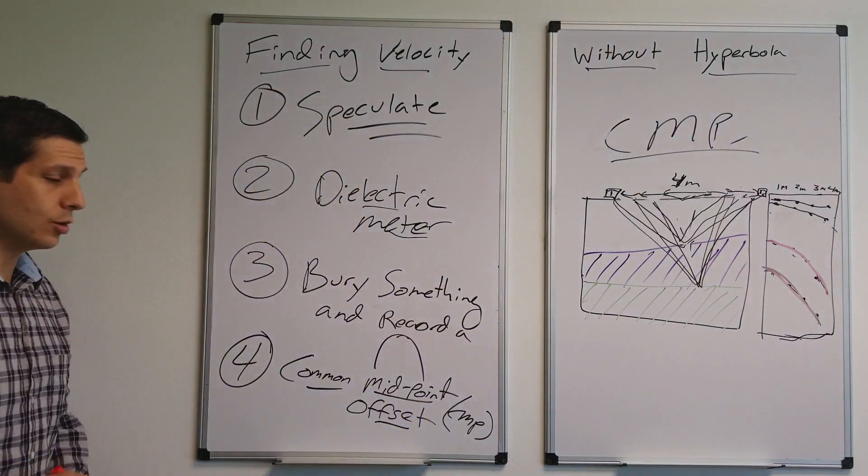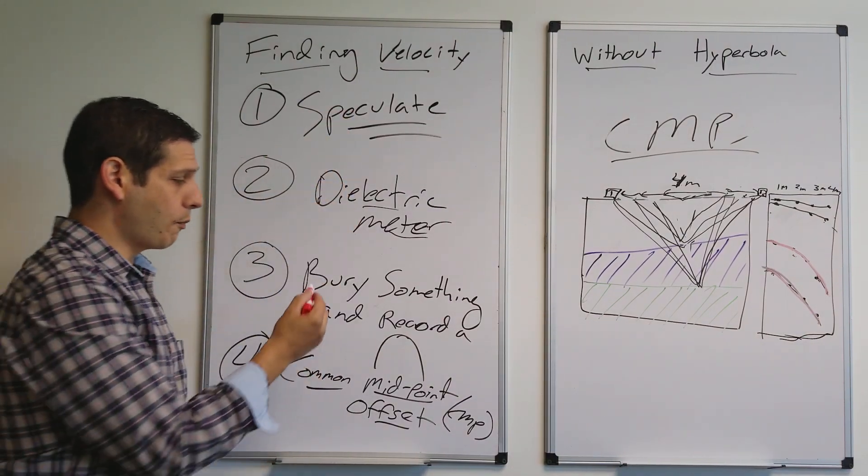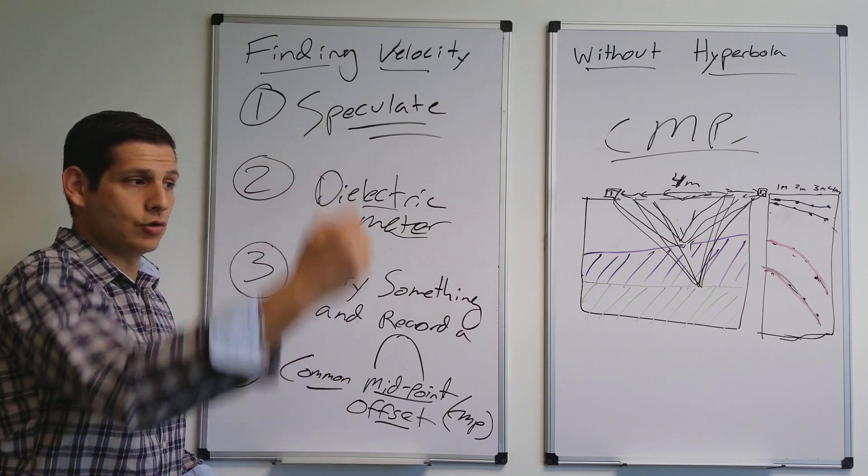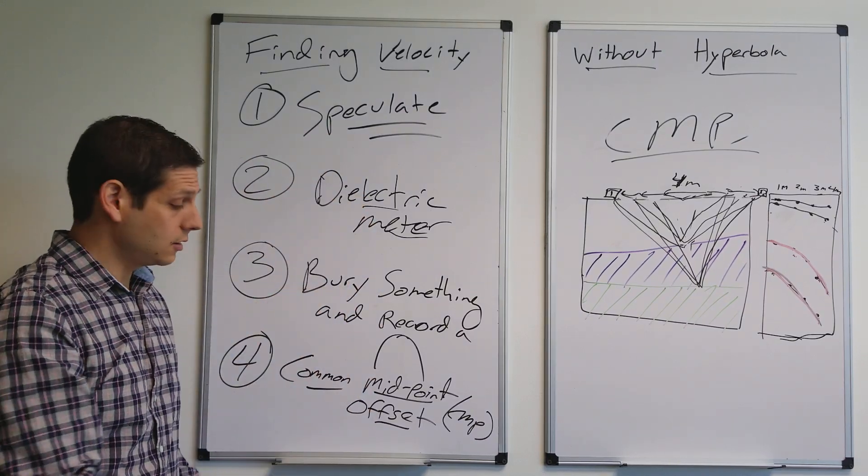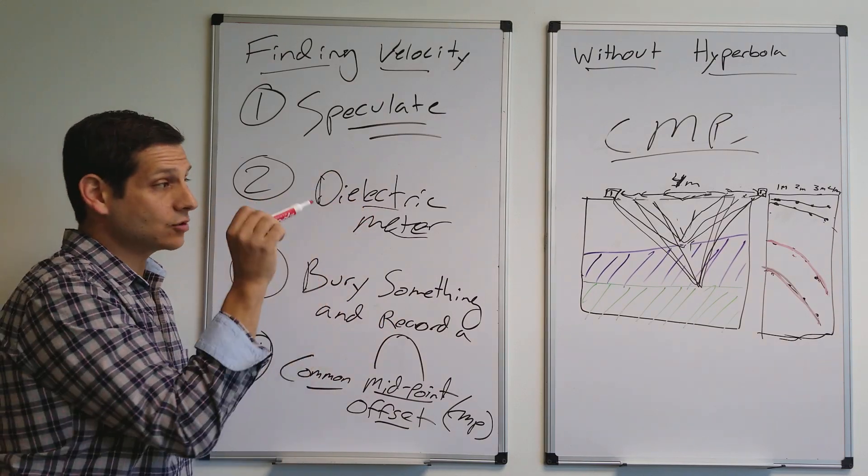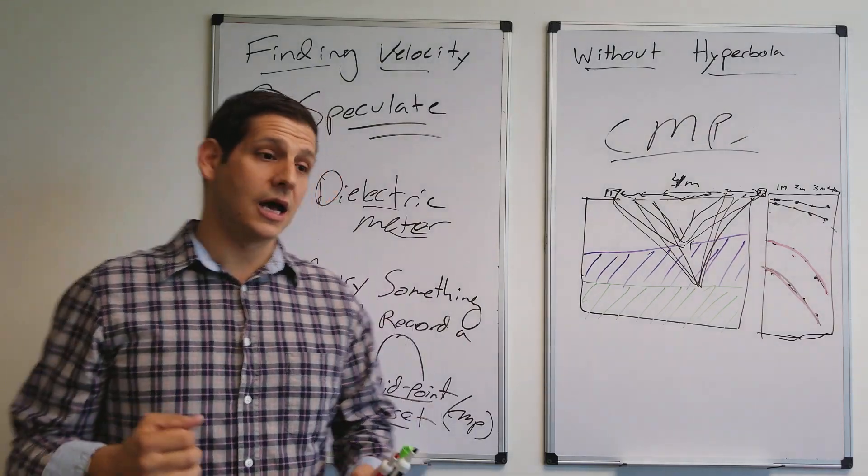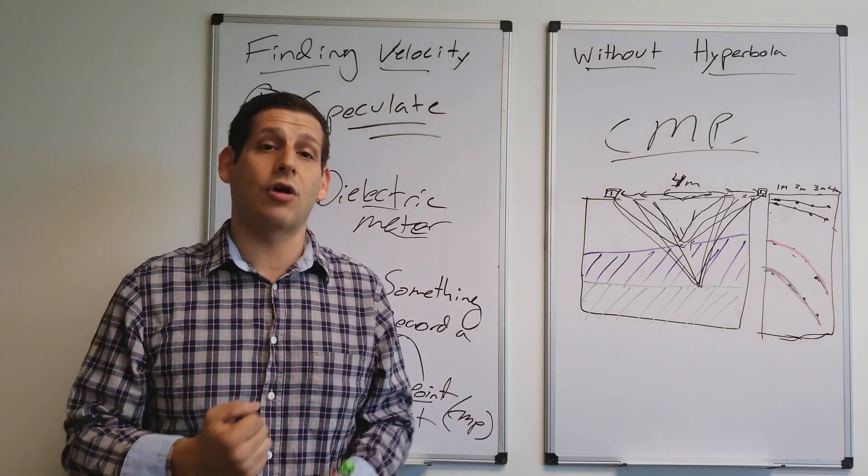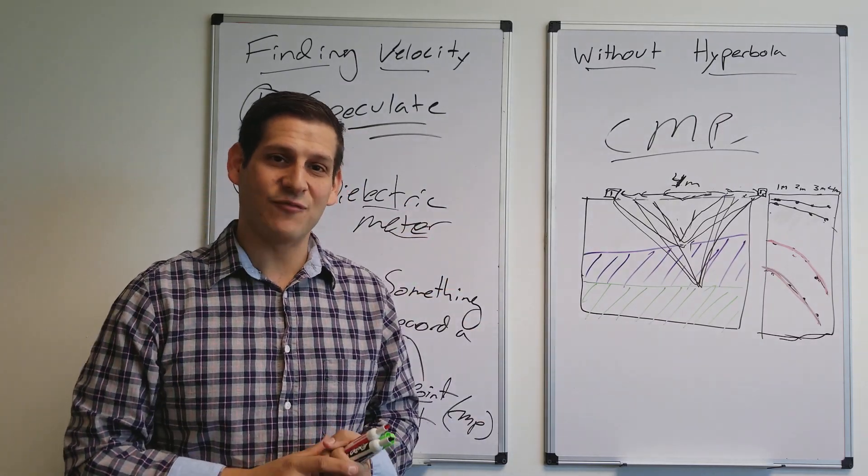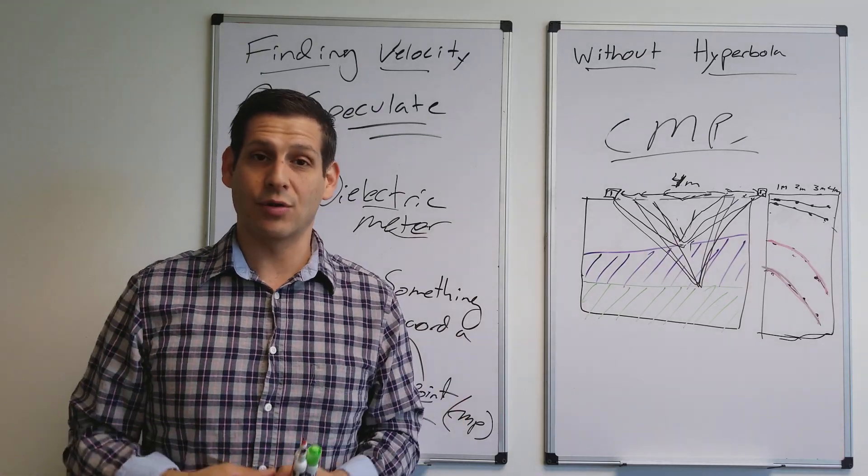That's the fourth way. What do you do if you don't have a hyperbola? You either speculate, you get a dielectric meter, you bury something and record a hyperbola, or it doesn't even have to be a hyperbola. You just record a response and then you can backtrack that response to the known depth, or use a common midpoint offset, which allows you to create a half a hyperbola based on that process and allows you to fit that half a hyperbola then. So I hope this was helpful. If you didn't know any of these in the comments below, tell me one that you never thought of before. I learned from all of you just like you learned from me.